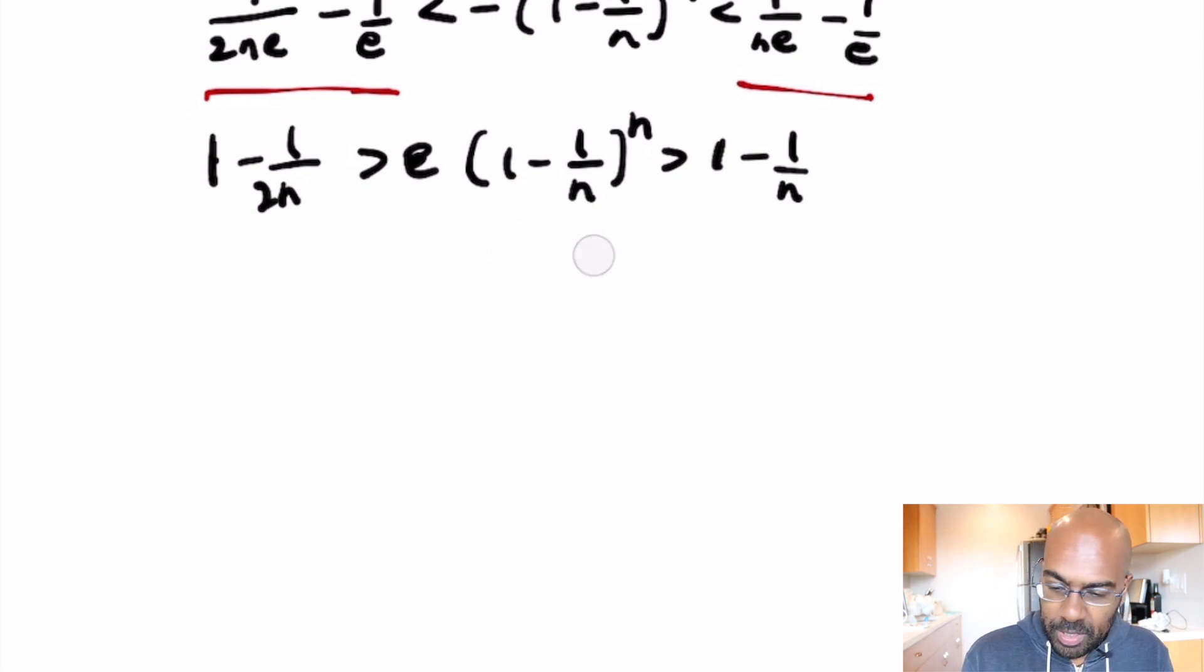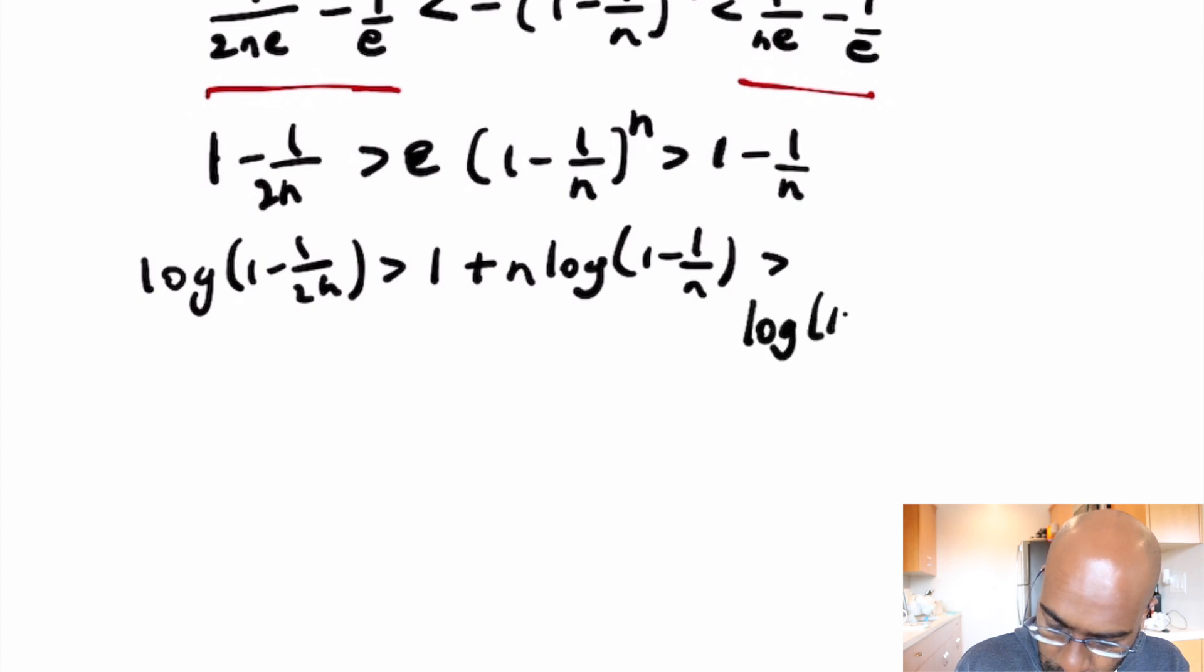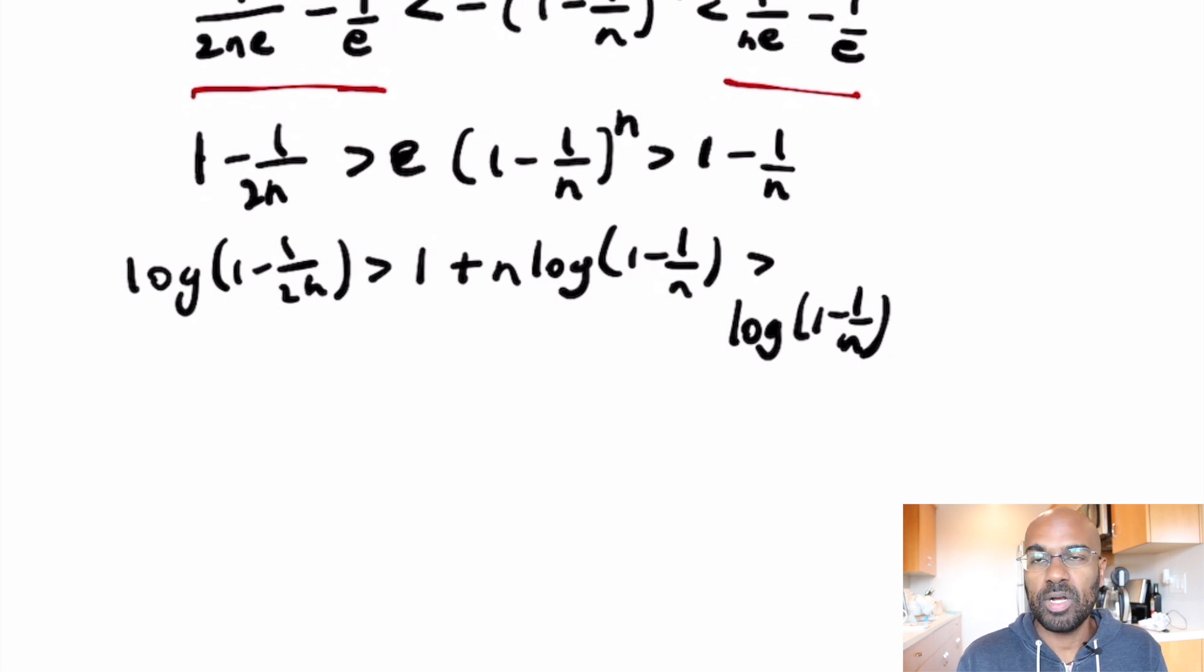We can do that by taking logarithms here. If we do that we'll have the logarithm of 1 minus 1 over 2n is greater than—I'll do the logarithmic expansion here—so log of e is 1, and then we'll have n log of 1 minus 1 over n being greater than log of 1 minus 1 over n. The reason why these inequalities are actually still satisfied is because the logarithm is an increasing function.